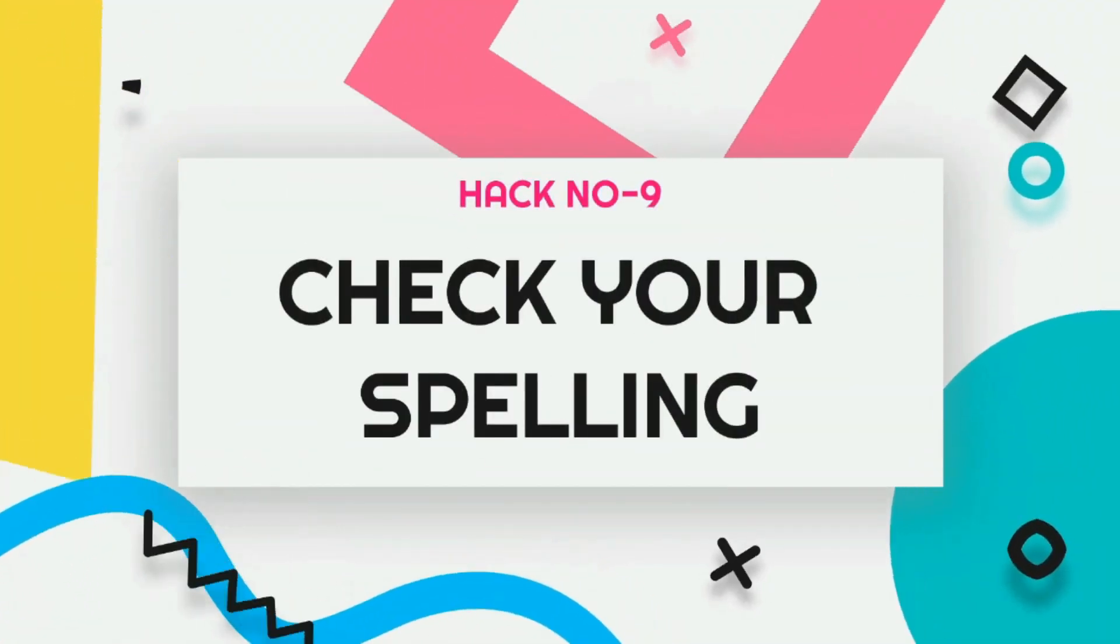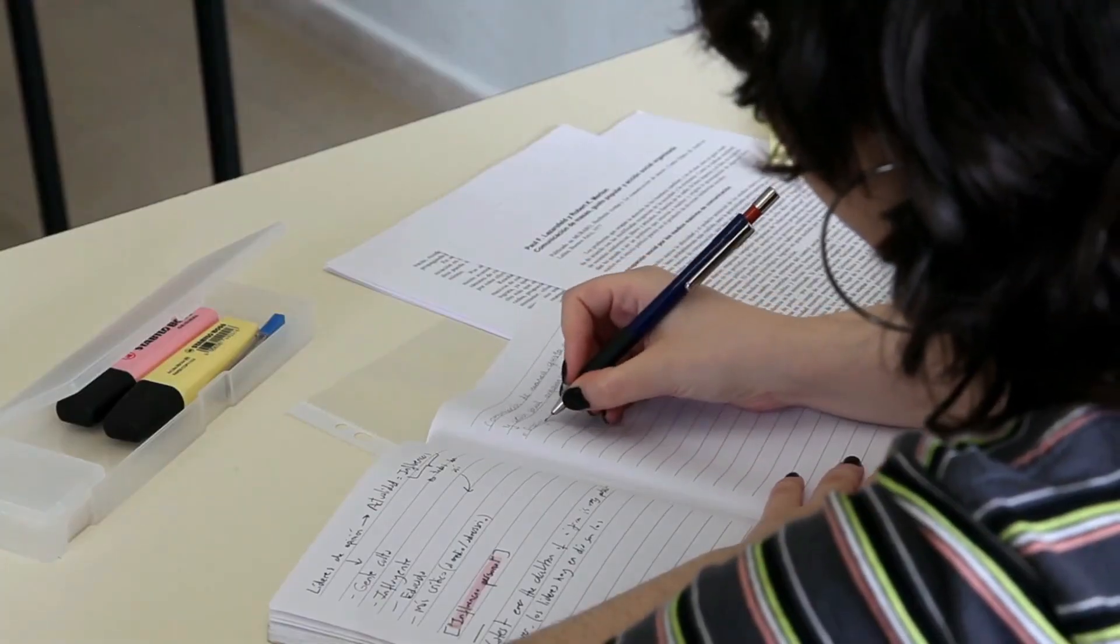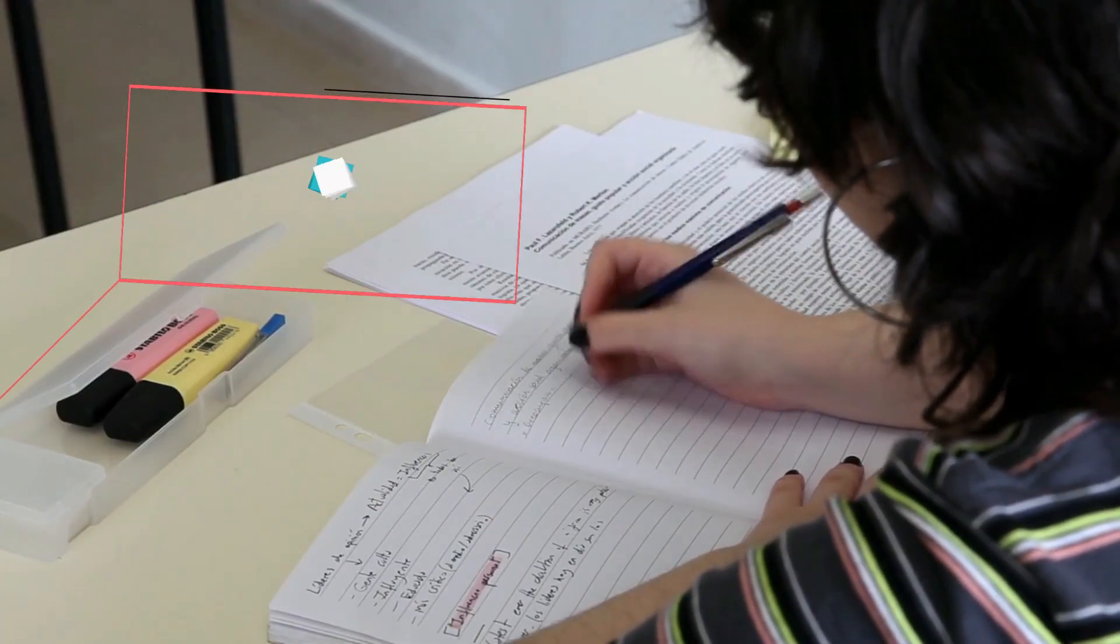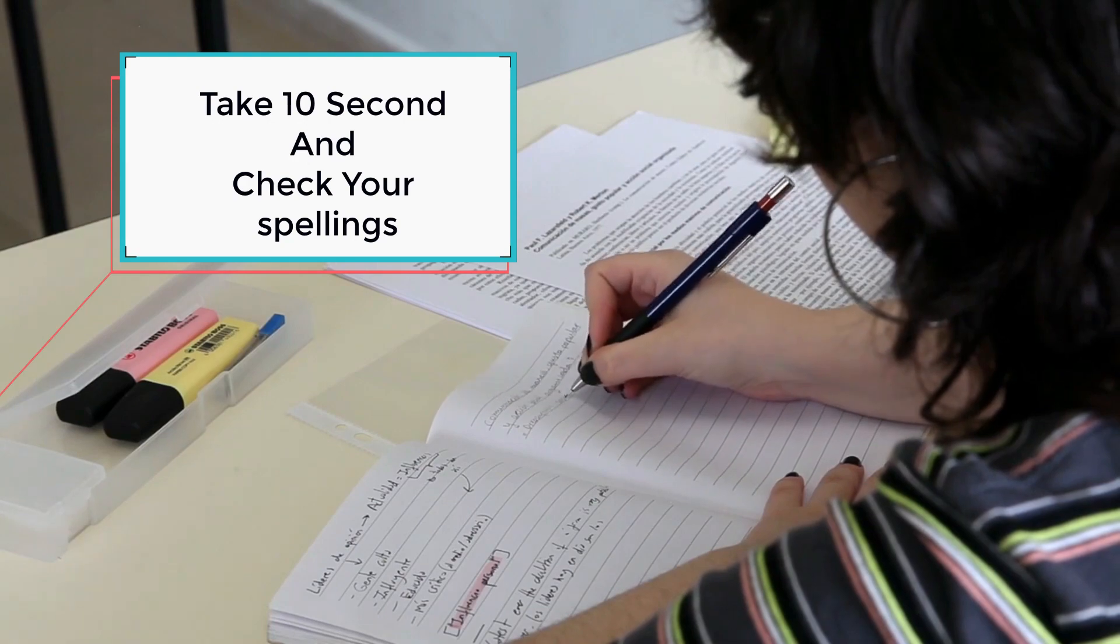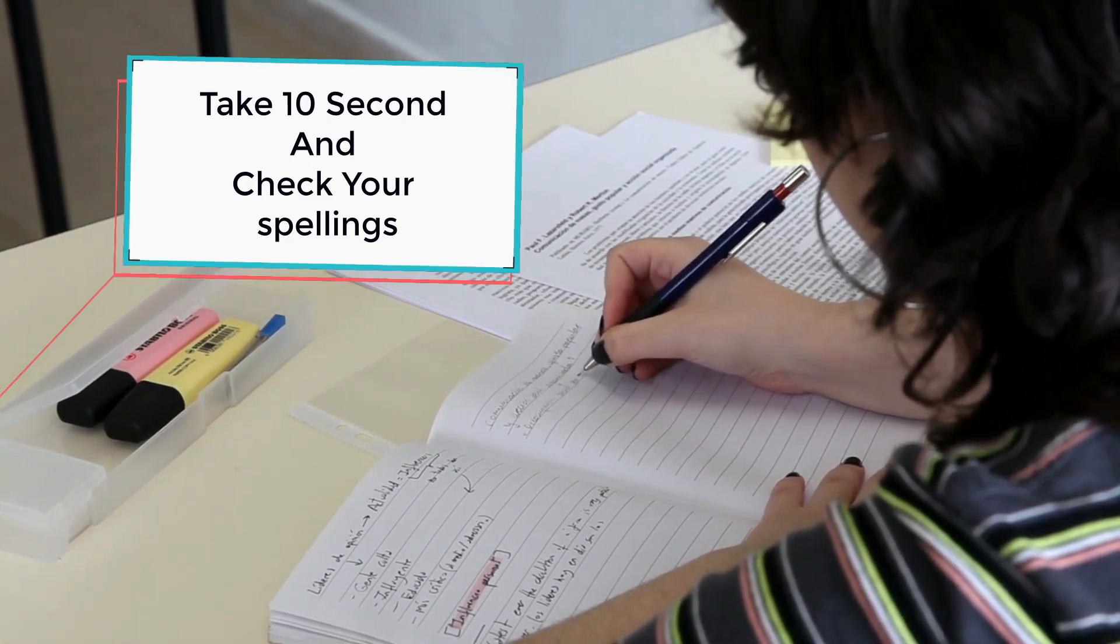Now, the next hack is, check your spellings. Jaise aapne revision ke liye time nikala, waise hi kya aapne spelling check ke liye time nikala? No? So, what you need to do is, ki jaise aapka a question ka answer finish ho, just skim through it, just give it 10 seconds or 20 seconds and skim through it and check the spellings. Because I'm sure, ki aap in small silly mistakes ki wajah se marks lose nahi karna chahte hai. Just give it a check, just skim through the answer and you're good to go.